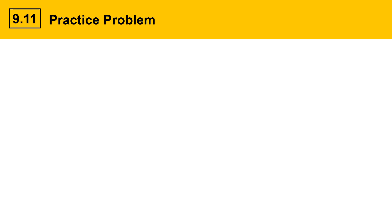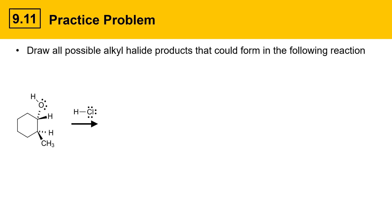We'll work through a practice problem on this slide. We're given a reaction and asked to draw all possible alkyl halide products that could form. This is a secondary alcohol, and the acid is HCl, so you should be able to predict that this is going to go by an SN1 mechanism. E1 mechanism is also likely here, but the question doesn't ask about elimination products or alkenes — it's focused on SN1.